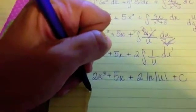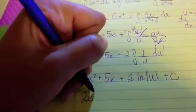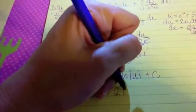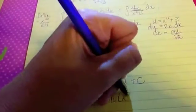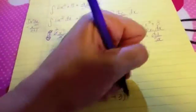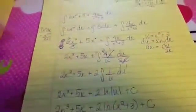in the real numbers. So we have 2x cubed plus 5x plus 2 times the natural log of x squared plus 3 plus our constant C, because we had an indefinite integral.